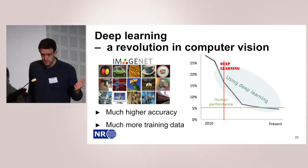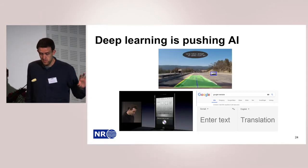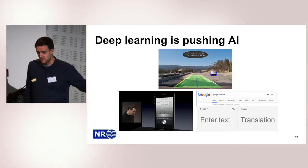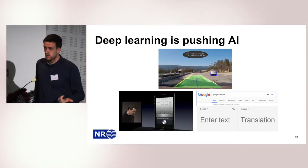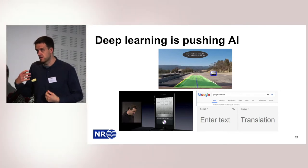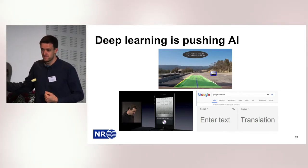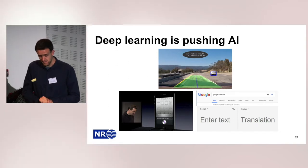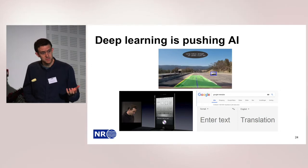These convolutional networks are pushing what we know as artificial intelligence. Our phones can talk to us and understand us — it's a convolutional network that has learned the relationship between speech and meaning that runs this technology. It's all based on finding the relationship between the input data and the output data.